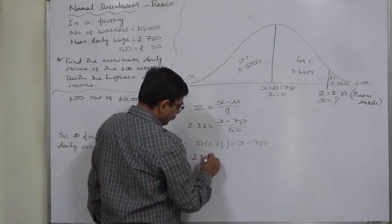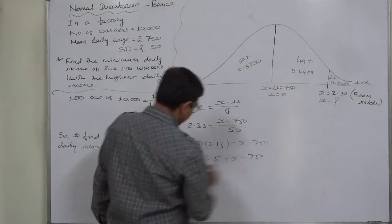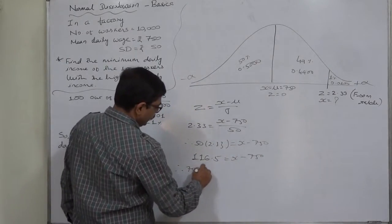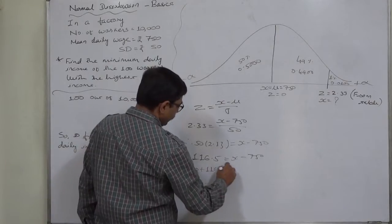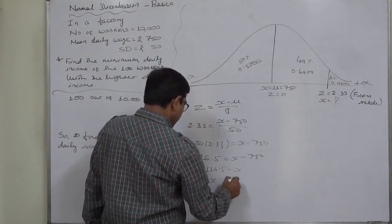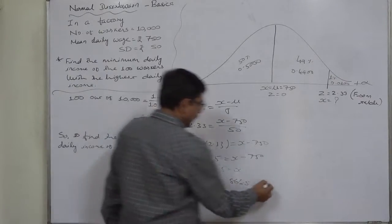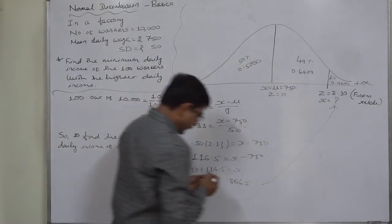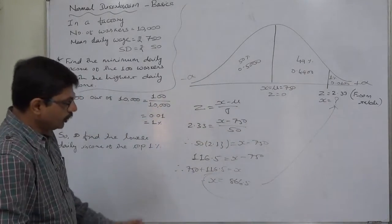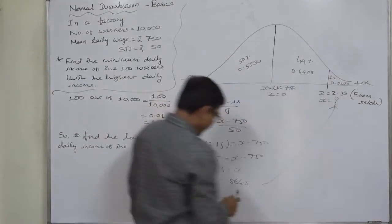So 750 + 116.5 = X, and therefore X = 866.5. This means X at this point is 866.5, so the top 1% workers have income more than 866.5.